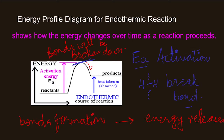If energy is released, we show the curve of the diagram going downward. If energy is absorbed, the curve moves upward. When heat is absorbed the sign is positive, and when heat is lost the sign is negative. The overall change in the reaction is described by the enthalpy change, delta H — the overall change in heat energy. If reactants have more energy than products, we will say this is the energy profile diagram for an endothermic reaction.